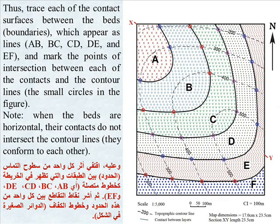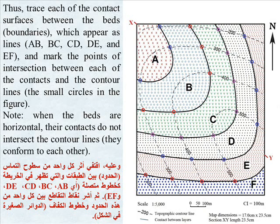Thus, trace each of the contact surfaces between the beds which appear as lines AB, BC, CD, DE, and EF. Mark the points of intersection between each of the contacts and the contour lines — shown as small circles in the figure. Note: when the beds are horizontal, their contacts do not intersect the contour lines; they conform to each other.